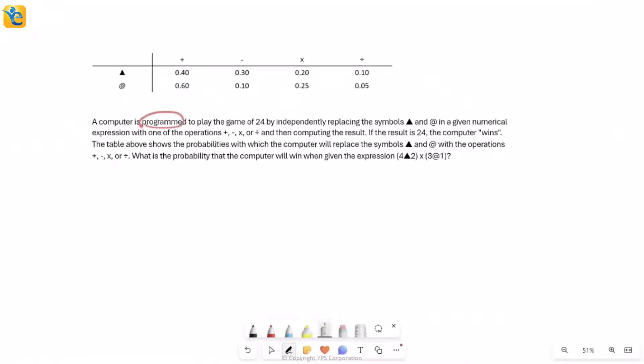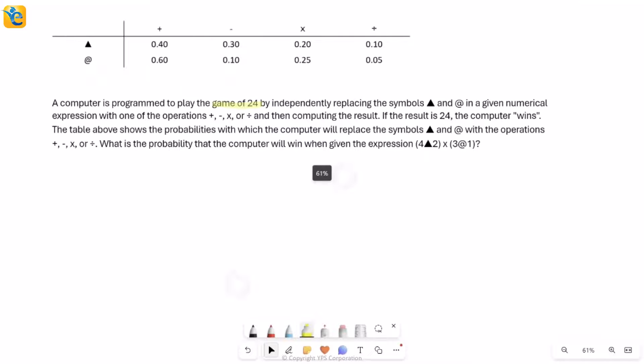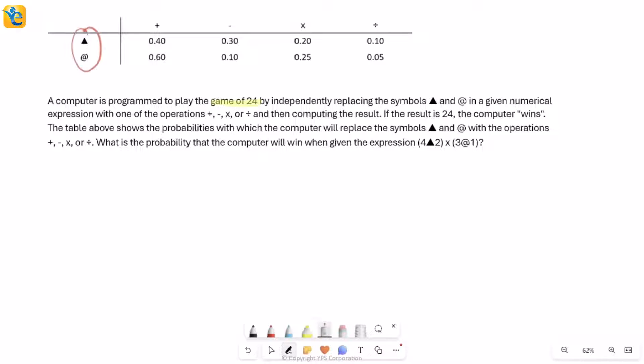So here, just focus on everything that's given and asked. Read it step by step. There is a certain computer that is programmed to play a certain game, the game of 24. And how does it play this game? You see these symbols here, the triangle and the other aid in the table. These are the symbols that it replaces by what? By one of the usual operations all of us know: plus, minus, multiply, divide. Now it replaces them where? In some given numerical expression, which means you give the computer any numerical expression.